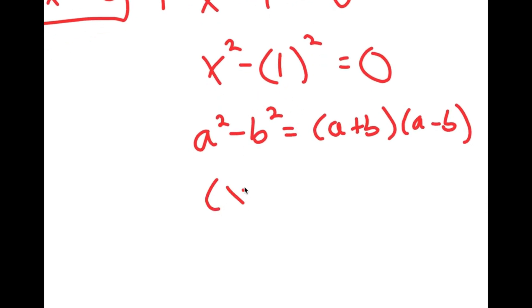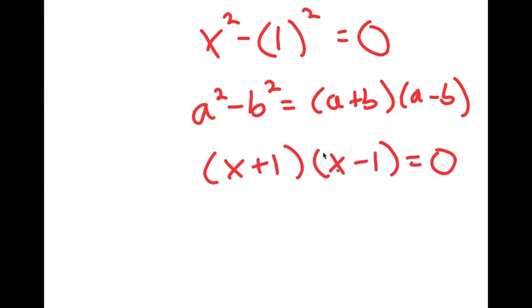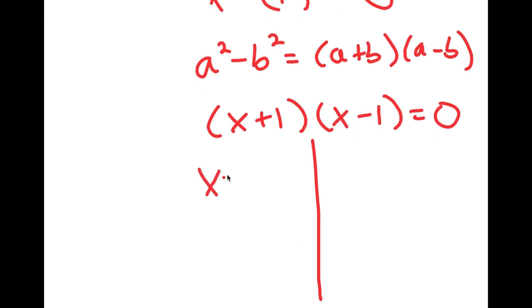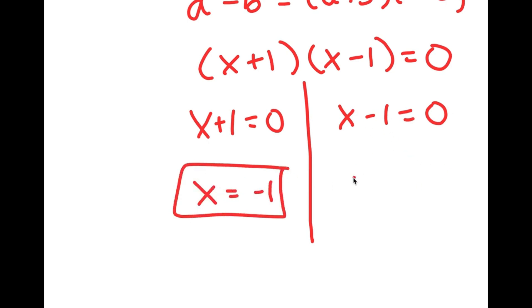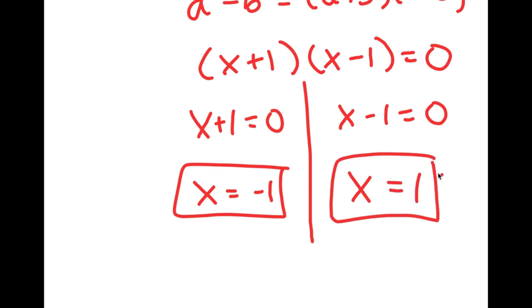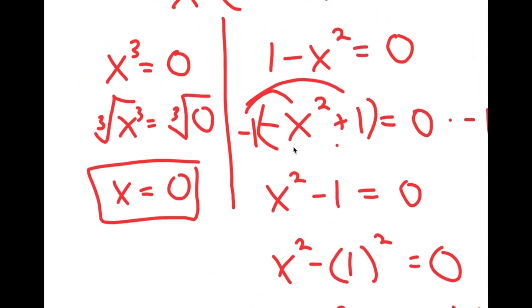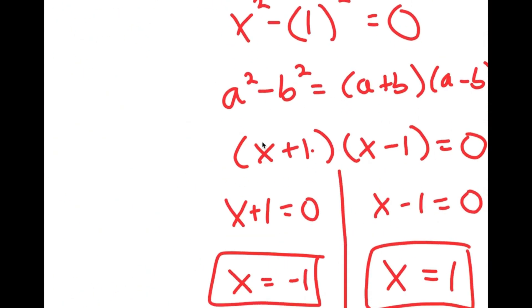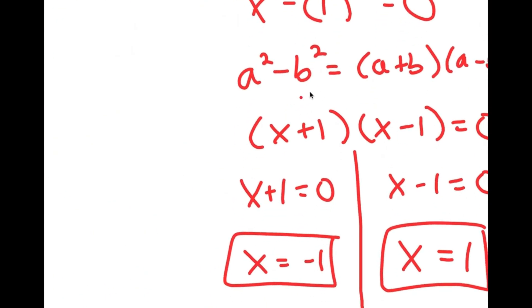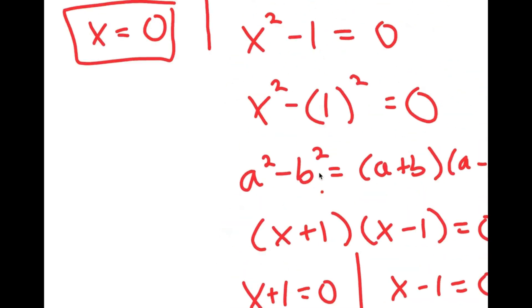So this is equal to x plus 1 times x minus 1 is equal to 0, meaning I get two equations: x plus 1 equals 0 and x minus 1 equals 0. For x plus 1 equals 0, I get x equals negative 1. And for x minus 1 equals 0, I get x equals 1. Notice how we have three solutions for this equation.